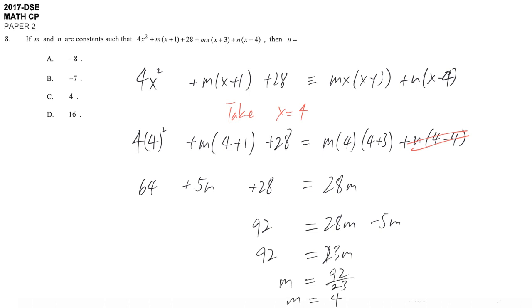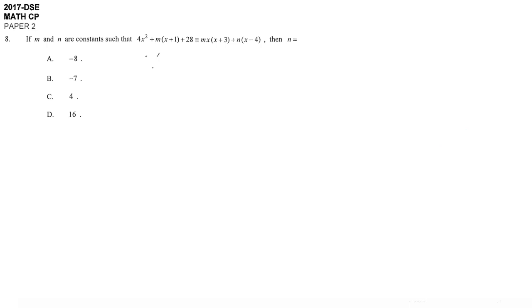Once we know that m equals 4, then we can just update the information. 4x squared plus 4 times x plus 1 plus 28 is always equal to 4x times x plus 3, and then plus n times x minus 4.